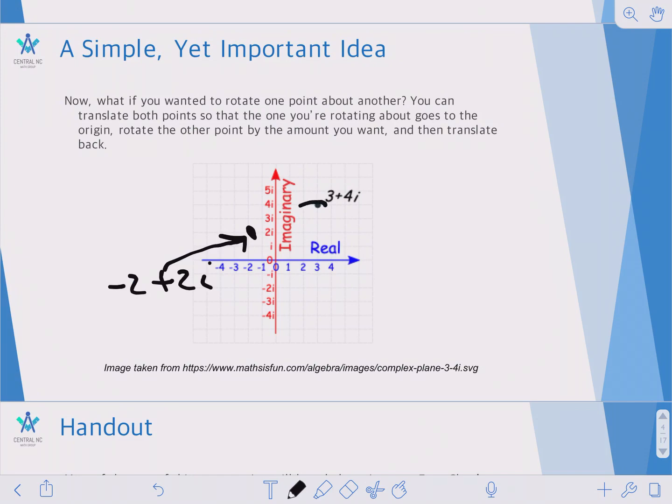So what we're looking for is something like this. We want to find that point. How we can do this is that we can translate 3 plus 4i by subtracting minus 2 plus 2i from it, then multiply by i to rotate by 90 degrees, and then translate back.